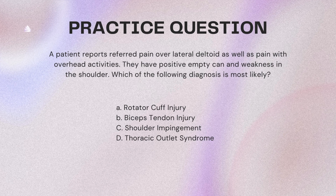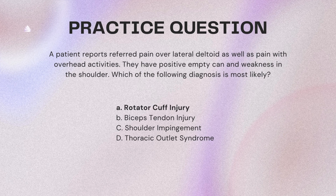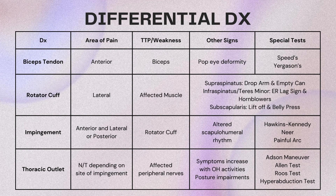Pain with overhead activities can be a lot of shoulder issues, but the thing that stands out the most is a positive empty can. Weakness in the shoulder goes with any shoulder pathology because the muscles will get weak over time. But empty can is for a supraspinatus rotator cuff tear, so A is the best answer. Biceps tendon injury pain is going to be more anterior shoulder near the bicipital groove, and the special tests would be Speed's and Yergason's. Shoulder impingement could have lateral shoulder pain and weakness, but empty can is not a shoulder impingement test — those are Hawkins-Kennedy, Neer, and painful arc. Thoracic outlet syndrome is the least fitting because the patient would report numbness and tingling, which is not reported in this case.